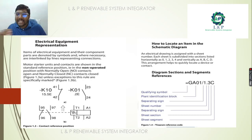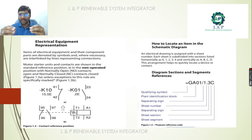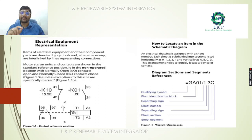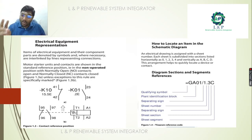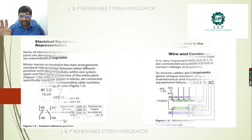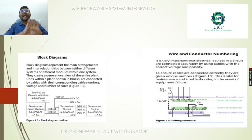Next is how to locate an item in the schematic diagram. In a drawing, we might have a sheet number, and each sheet number is subdivided into sections — represented horizontally from 0 to 1, or vertically as A, B, C, D, E. For a diagram section segment reference, we need: a qualifying symbol, plant identification block, a separating sign, sheet number, another separating sign, sheet section, and lastly sheet segment.